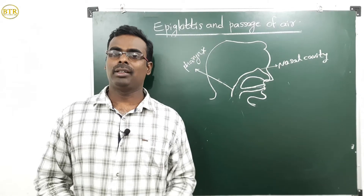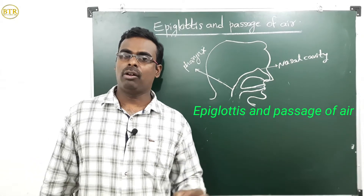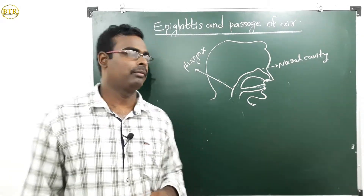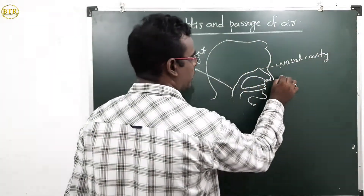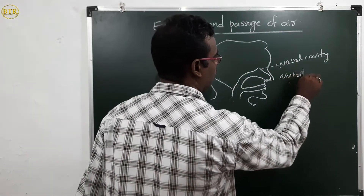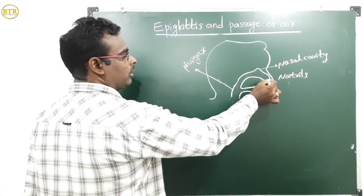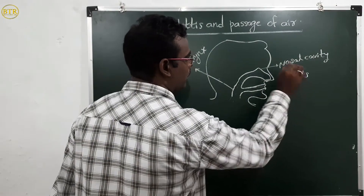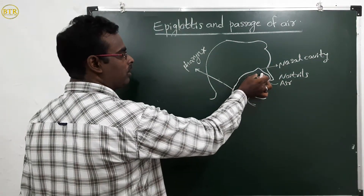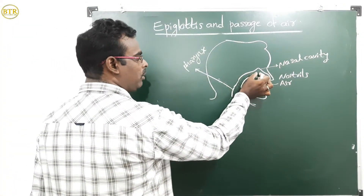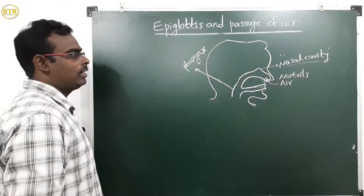Hello children, now we will discuss about the epiglottis and passage of air. What is the importance of epiglottis in the respiratory system? See the diagram. These are called nostrils. Air enters into our body through the nostrils and it moves to the empty place present in our nose. The empty place present in the nose is called the nasal cavity.